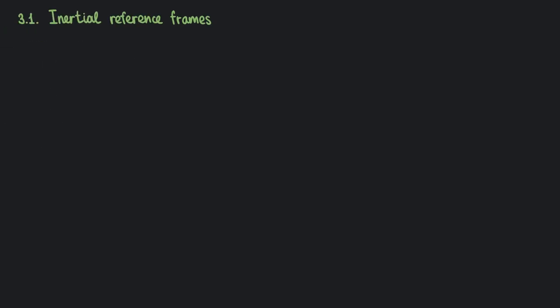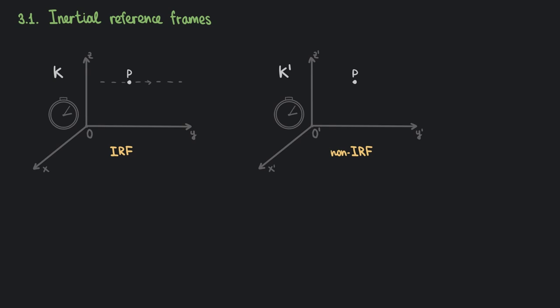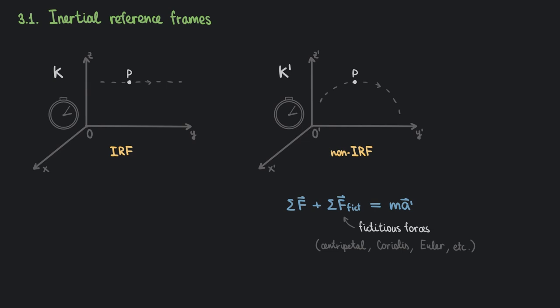As you know, Newtonian mechanics postulates the existence of a special class of reference frames in which free bodies move uniformly along straight lines. These are so-called inertial frames of reference. In such frames, the laws of physics have the simplest possible form. If we would consider an arbitrary frame of reference instead, and wanted to write down, for example, Newton's second law, it might contain additional terms — so-called fictitious forces — which would make the description of the system more complicated. Free bodies in such frames would no longer move uniformly along straight lines, even though there were no real forces acting on them. From a Newtonian perspective, what makes inertial frames privileged is exactly the absence of these fictitious forces.